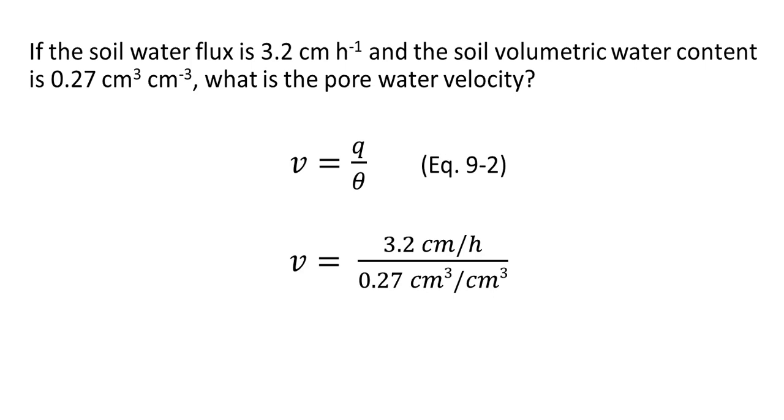we have that the pore water velocity is equal to 3.2 centimeters per hour, that is our flux value, divided by our volumetric water content, which is 0.27 centimeters cubed per centimeters cubed. And if we plug those values into our calculator,